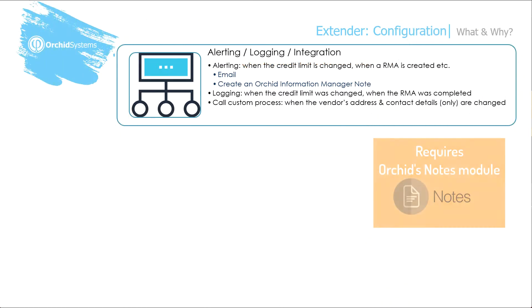We've just seen an example of alerting and logging attached to a core Sage 300 view — the AR Customer view — and to a third-party view — the RMA view. And we also saw how you could configure a custom program being called around the AP Vendor.